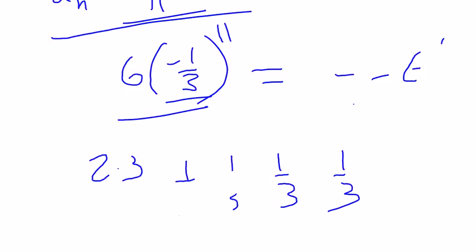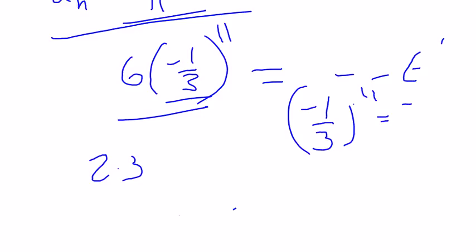Actually maybe I'll even explain that a little better. So we have negative 1 third to the 11th, which would be negative 1 to the 11th over 3 to the 11th.